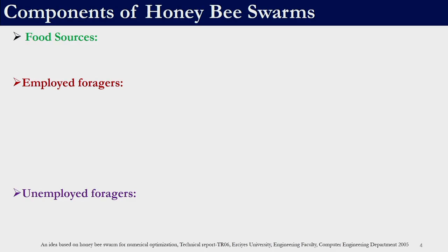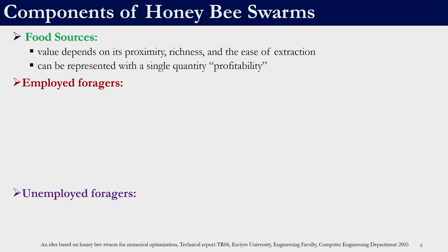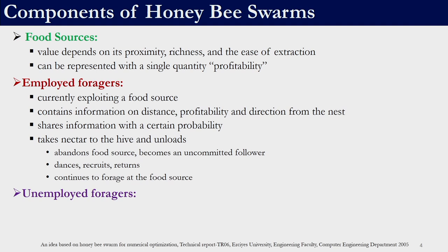Before we move on to the algorithm we need to understand the components of honey bee swarms. There are three major components: the food source, the employed bees, and the unemployed bees. A food source's value depends on its proximity, richness, and ease of extraction — these can be represented with a single quantity known as profitability, similar to our solutions. Each solution has an objective function value associated with it; the objective function value can be considered as profitability, and food sources represent the solutions in optimization.